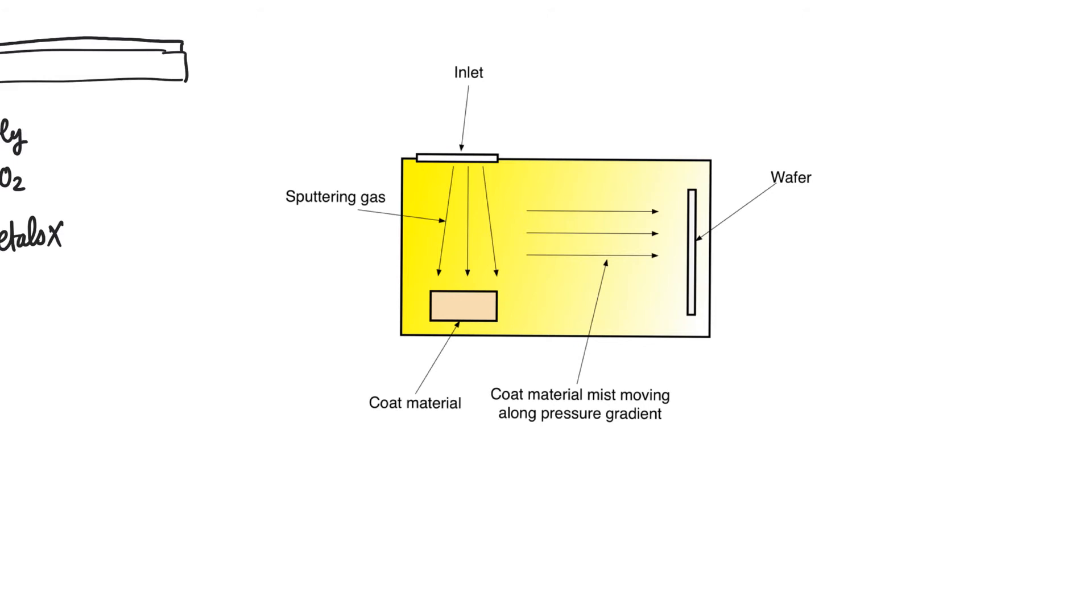One method of physical vapor deposition is called sputtering, and sputtering is usually used to create metal wires on top of the wafer. And in sputtering, this is the setup for sputtering. There's an inlet, and the wafer is on this end of the chamber, and there's an inlet to the chamber.